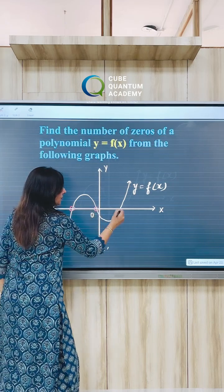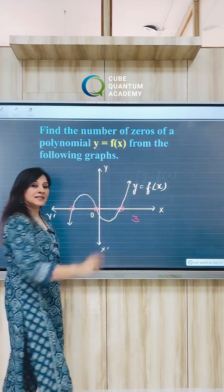So it's 1, 2, 3. So the number of zeros of this graph is 3.